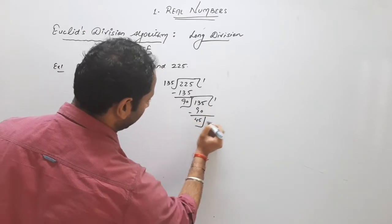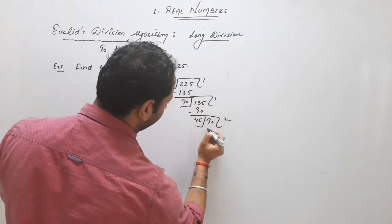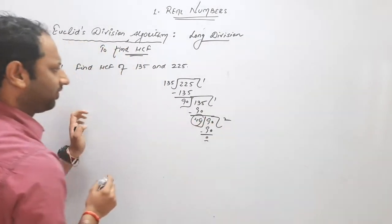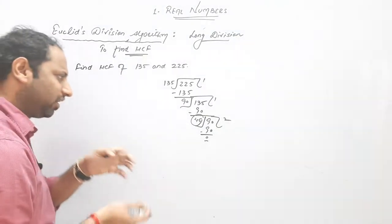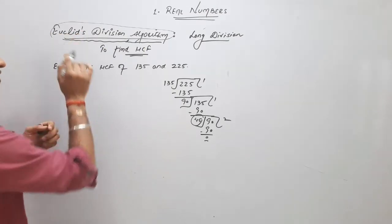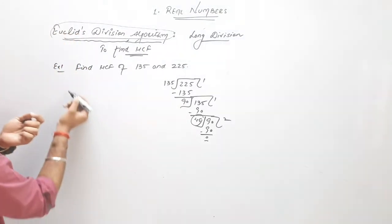45, 2, 090. So it is clear that HCF is 45. But the question is this is not long division. What we have to do? Euclid division. And what was the algorithm of division?